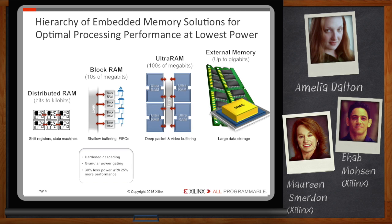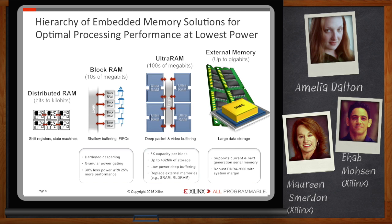UltraRAM capacity is in the hundreds of megabits, but many designs will need even more than that for buffering. UltraRAM doesn't pretend to replace all memories. If a system needs data storage in the gigabit range, they're going to need to attach external SDRAM or perhaps a serial memory component like Micron's HMC. We've been working on this front as well, with support for the latest serial memory devices as well as DDR4 support at 2666 megabits per second. So we have several memory solutions at our disposal — we can leverage the right ones for the right use models.